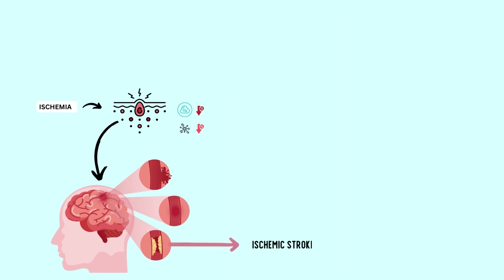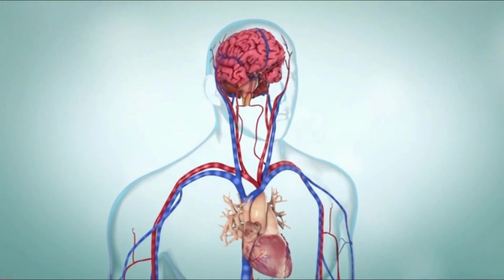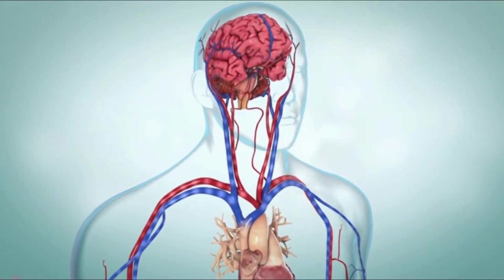Ischemic stroke is caused by a lack of blood and oxygen to the brain, whereas hemorrhagic stroke is caused by bleeding or leaky blood vessels. Ischemic stroke is the most common type of stroke.